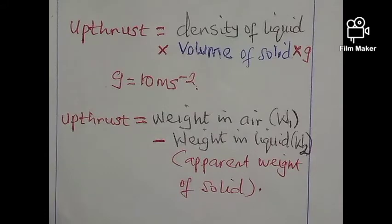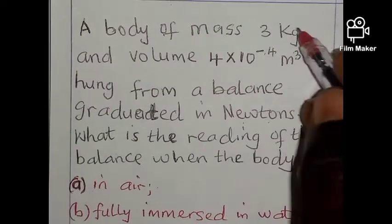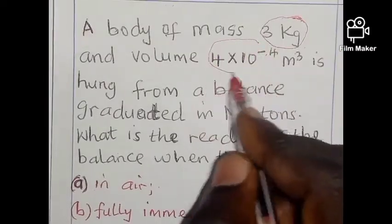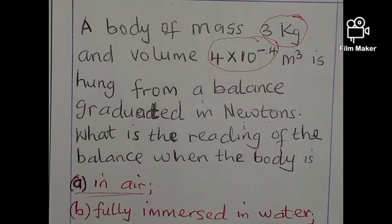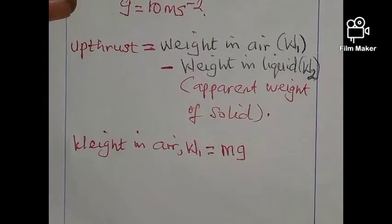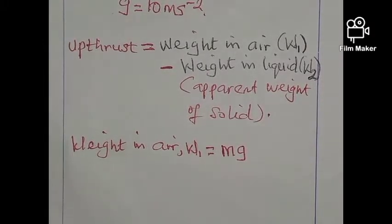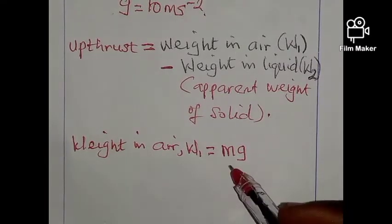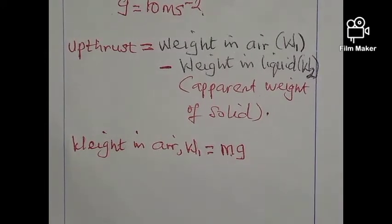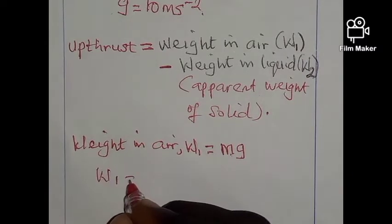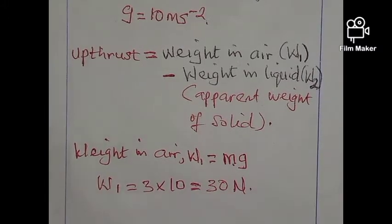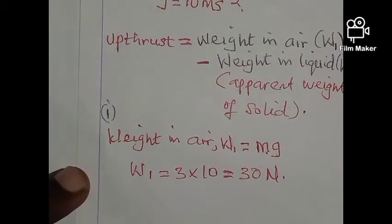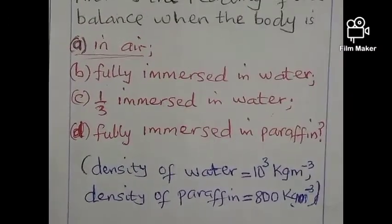Going back to the question: the mass of the body is 3 kg and the volume is 4×10⁻⁴ m³. To find the weight in air, W1 = mass × g = 3 × 10 = 30 N. So the weight in air is 30 newtons.